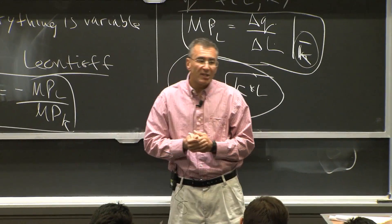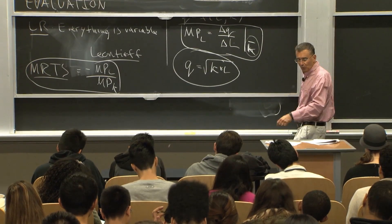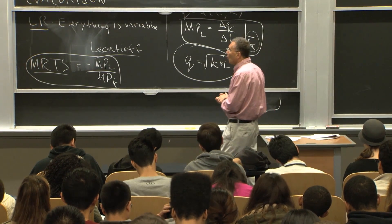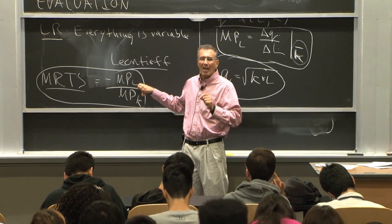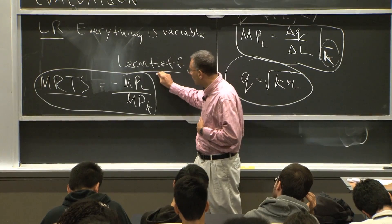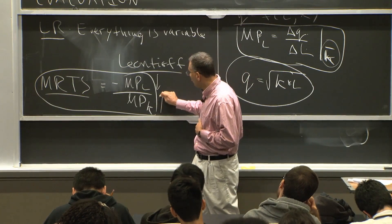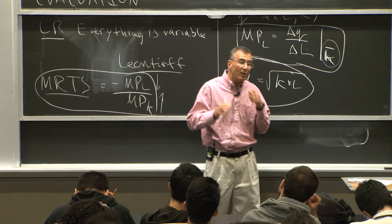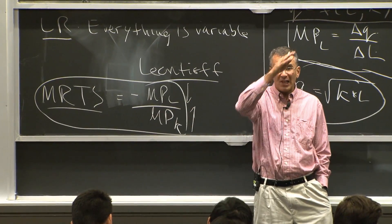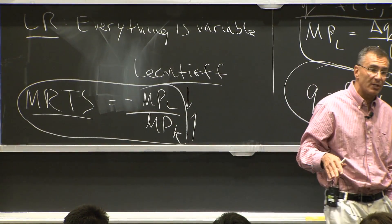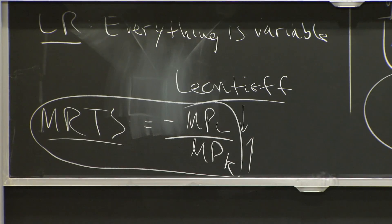Intuitively, as you replace capital with labor moving down the isoquant, the marginal product of labor decreases due to diminishing returns, while the marginal product of capital increases because there are fewer machines. So the MRTS is falling as you move down the isoquant — more workers makes workers less productive, and less capital makes capital more productive. That's why the marginal rate of technical substitution diminishes, as shown in Figure 8-3.